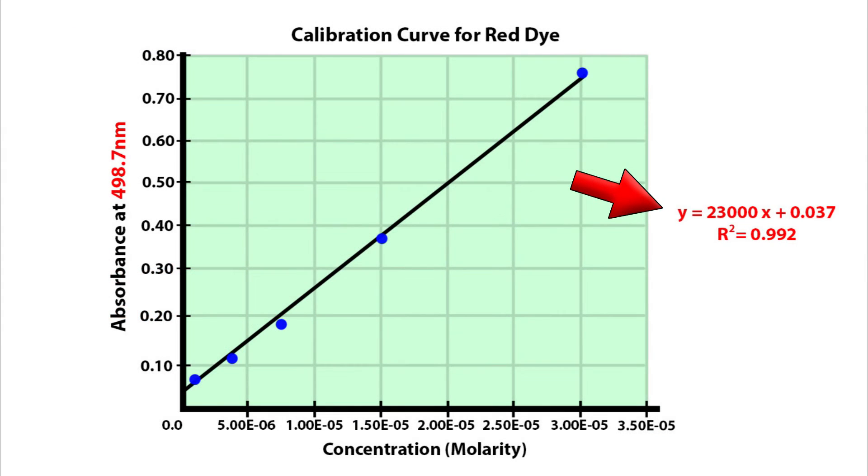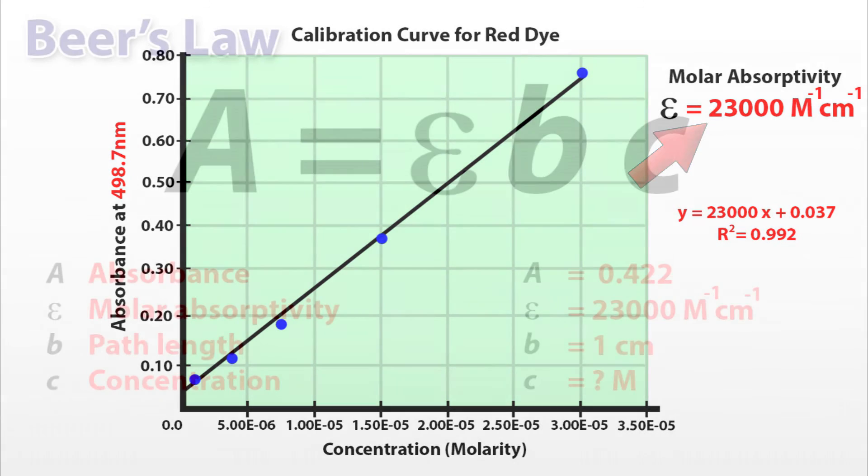This is my line equation generated by Excel. Recall that the line equation is simply y equals mx plus b and m, your slope, is the molar absorptivity with units per molar per centimeter. This number is the last piece of the puzzle in order for you to use Beer's Law and get an A in this lab.